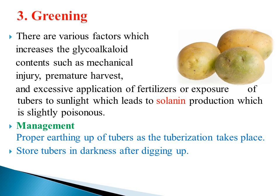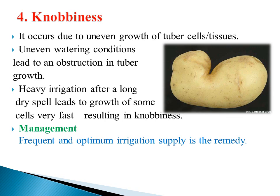The fourth disorder is knobiness. It occurs due to uneven growth of tuber cells or tissues. Uneven watering conditions lead to obstruction in tuber growth — heavy irrigation after a long dry span causes some cells to grow very fast, resulting in knobiness at a particular part or end of the tubers. Management is to supply frequent and optimum irrigation as the main remedy; apply timely irrigation to the potato crop.